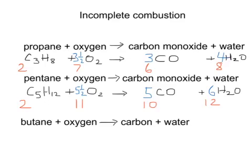In the final example, we are likely to be given the formula for butane, which is C4H10. We would be expected to know that oxygen is O2, and here we are only making carbon, which is C, and water, H2O.